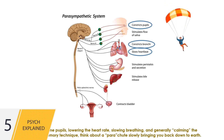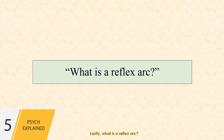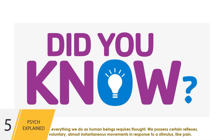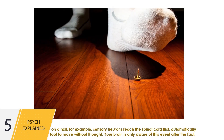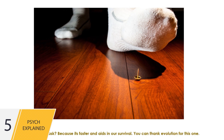As a memory technique, think about a parachute slowly bringing you back down to earth. Lastly, what is a reflex arc? Not everything we do as human beings requires thought. We possess certain reflexes, which are involuntary, almost instantaneous movements in response to a stimulus like pain. After stepping on a nail, for example, sensory neurons reach the spinal cord first, automatically causing your foot to move without thought. Your brain is only aware of this event after the fact — because it's faster and aids in our survival. You can thank evolution for this one.